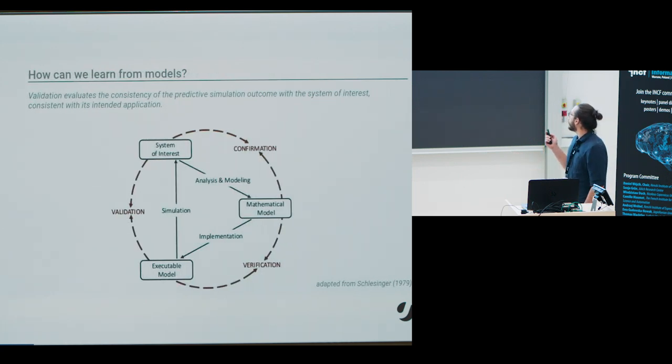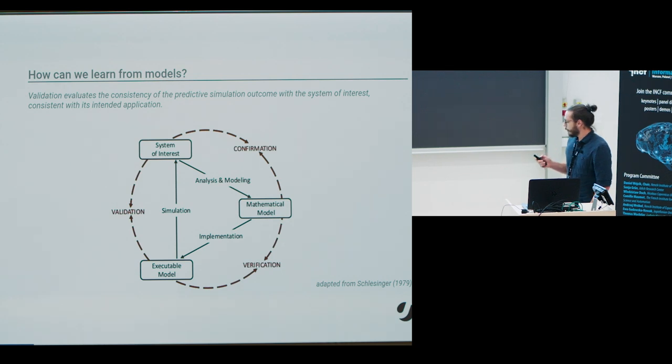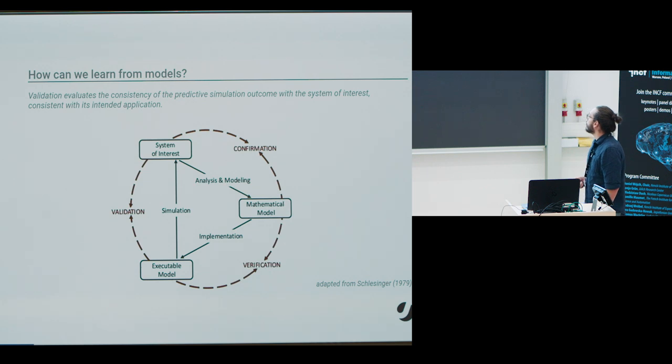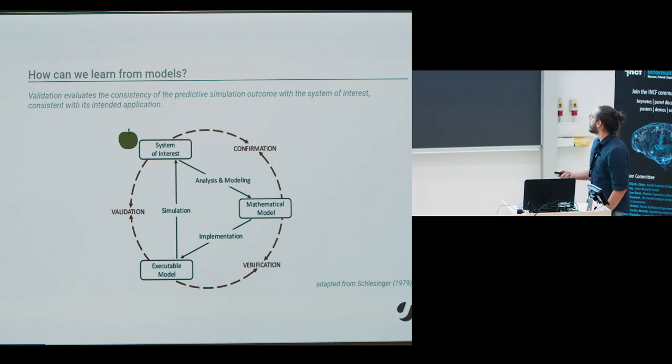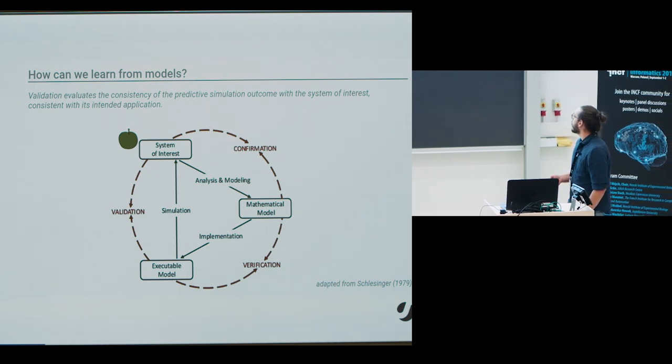This is a schematic you see about the modeling environment with three key components. On the top you see the system of interest I already mentioned. To give a very simple example of what this could be, this could be, for example, a ripe apple tree with falling apples. And by careful analysis and some theoretical considerations, one might be able to construct a mathematical model of it as Newton did.